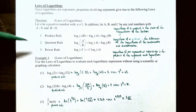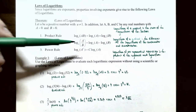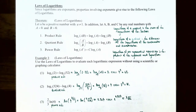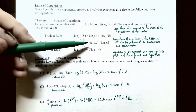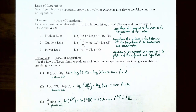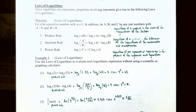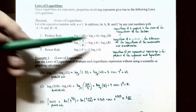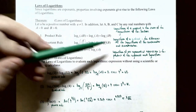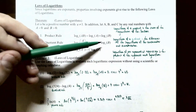Number two, the quotient rule: log base a of a fraction A divided by B. If you take a quotient as the argument, you can rewrite this into a difference of logarithms with the same base — log base a of A minus log base a of B, where A was in the numerator and B was in the denominator. Since you're talking about a difference, the order is important.